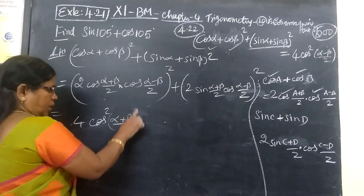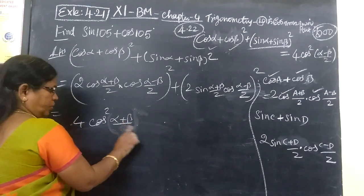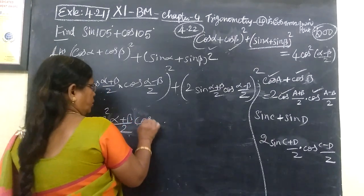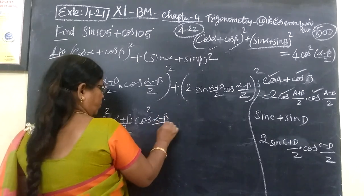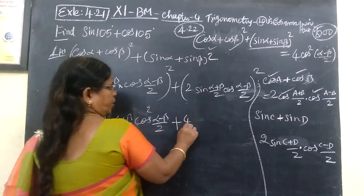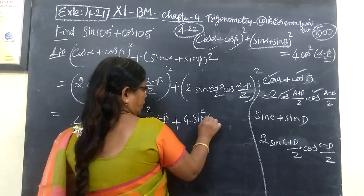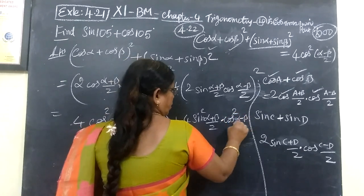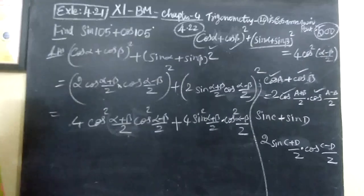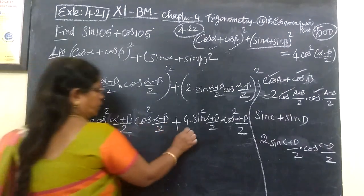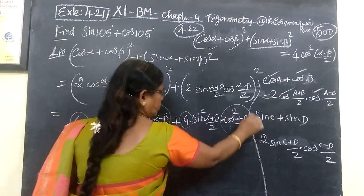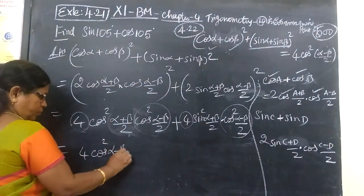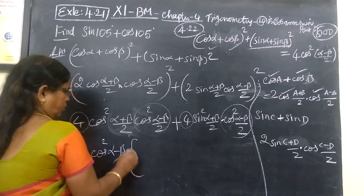That is wrong, that is wrong, here is 4. Here is the 4. Here is the ratio, square, then cos square alpha minus beta by 2, then 2 is square, 4 is — then sin square, then sin square alpha plus beta by 2, into cos square alpha minus beta by 2. Now which is common? 4 common, then cos square alpha minus beta by 2 common, and sum — so that you take outside alpha minus beta by 2.